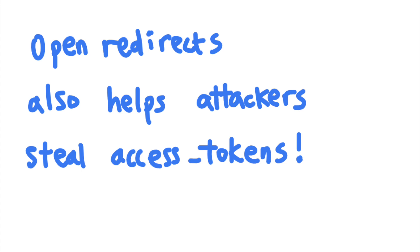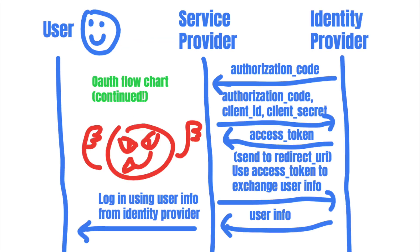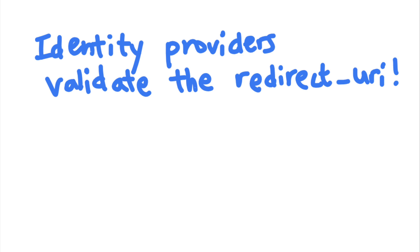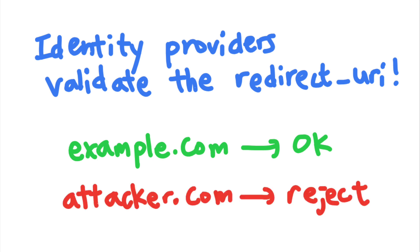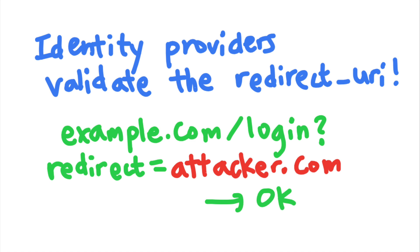So how do open redirects help attackers steal access tokens? OAuth access token thefts rely on the manipulation of the redirect URI parameter in the OAuth process to steal the access token from the victim's account. Since the redirect URI is where the access token will be sent, most identity providers will only send the access token to URLs on an approved whitelist and reject any other redirect URI. But open redirect vulnerabilities can help attackers bypass this restriction.